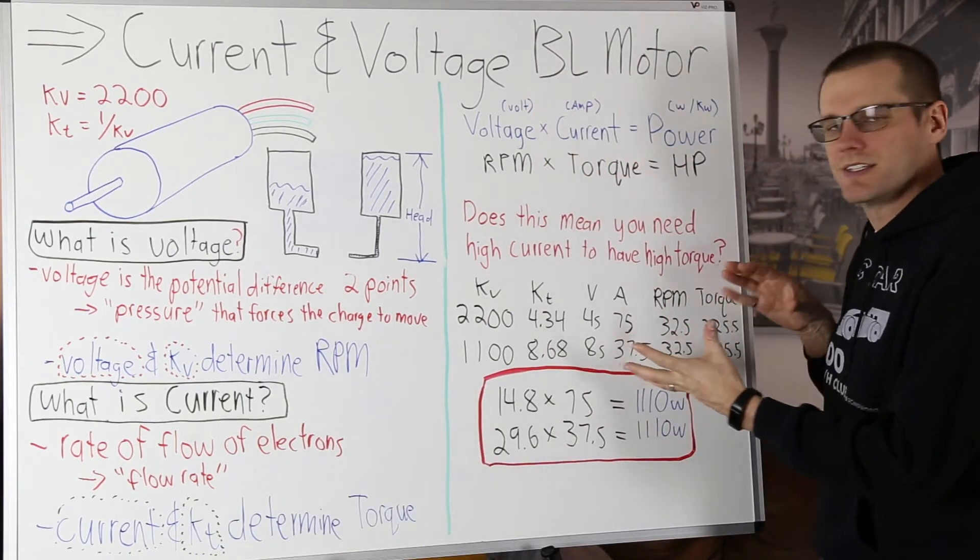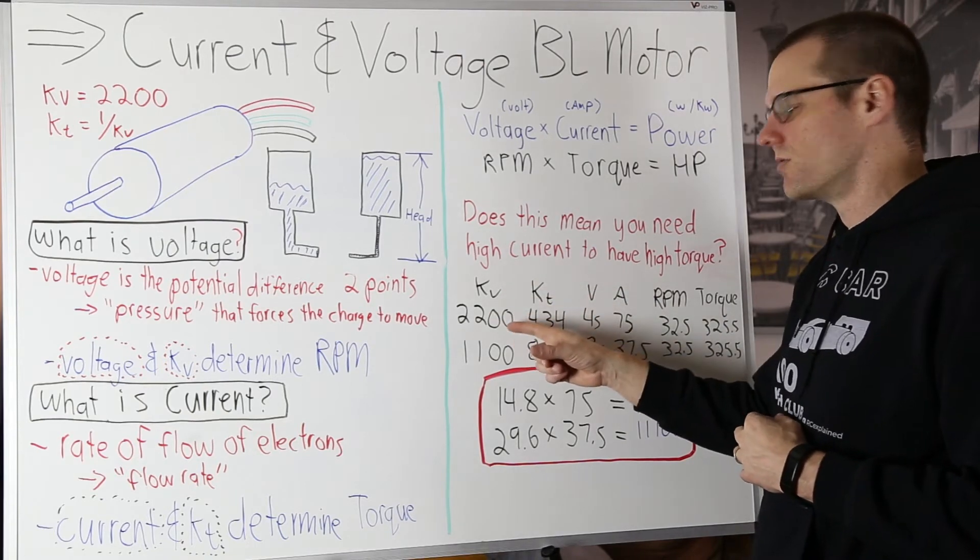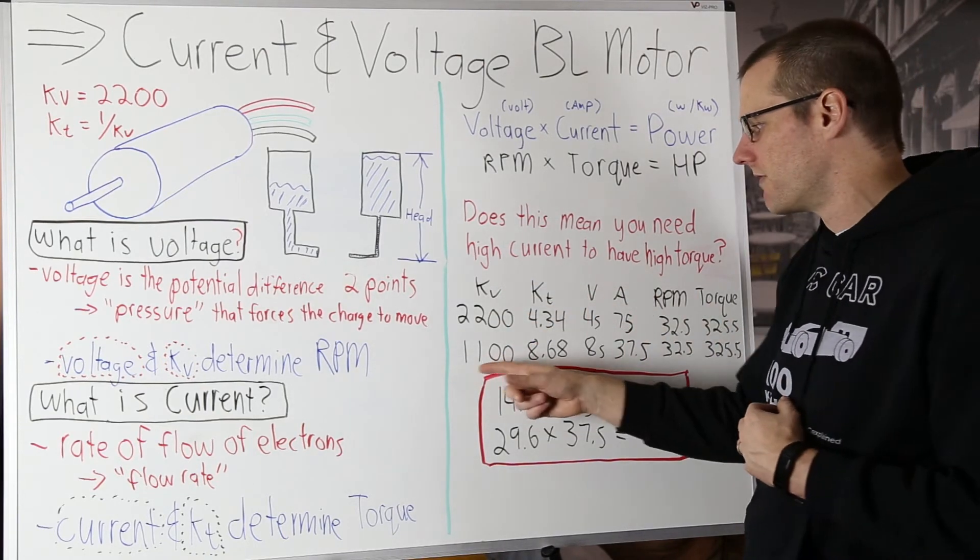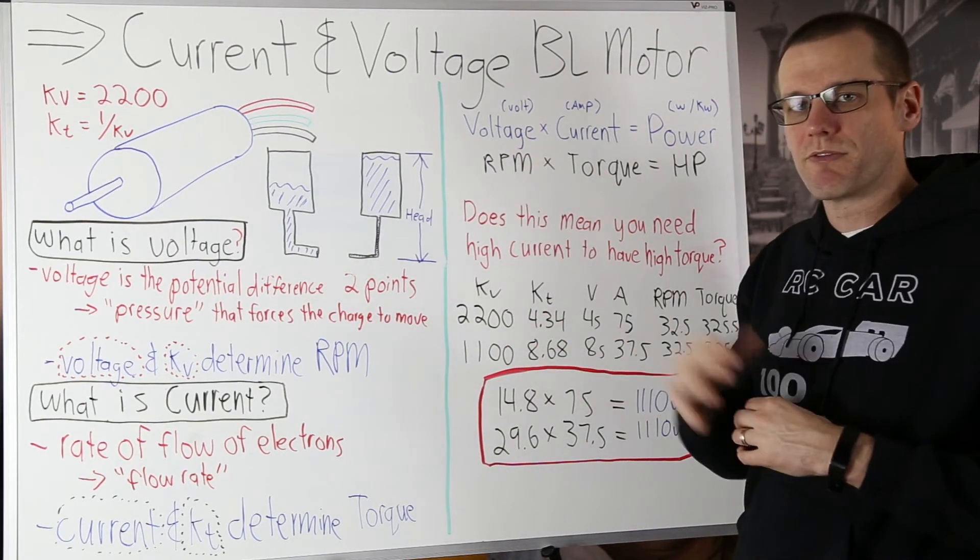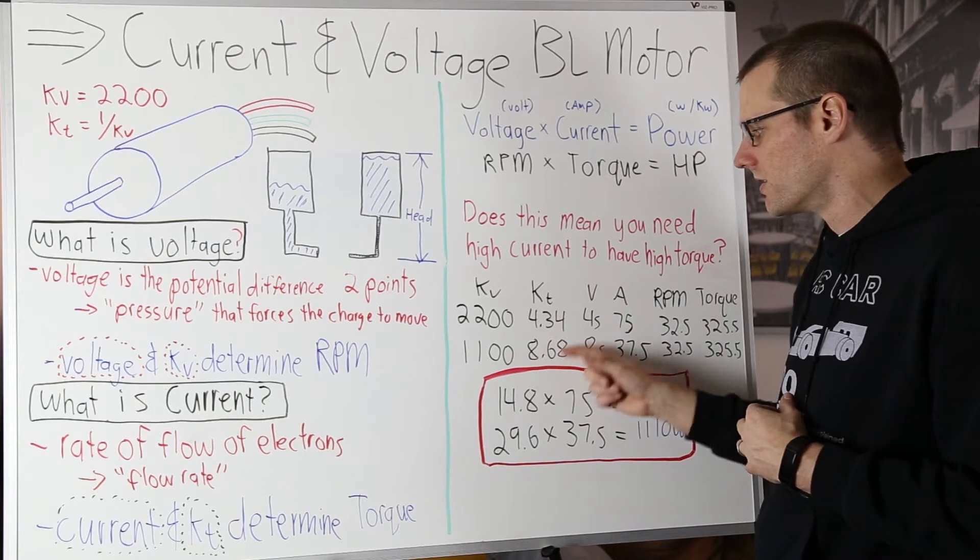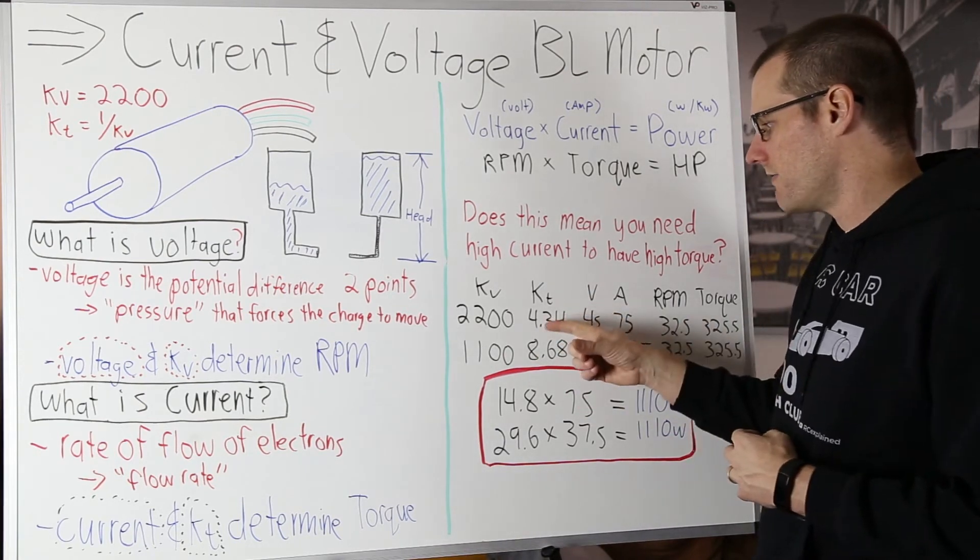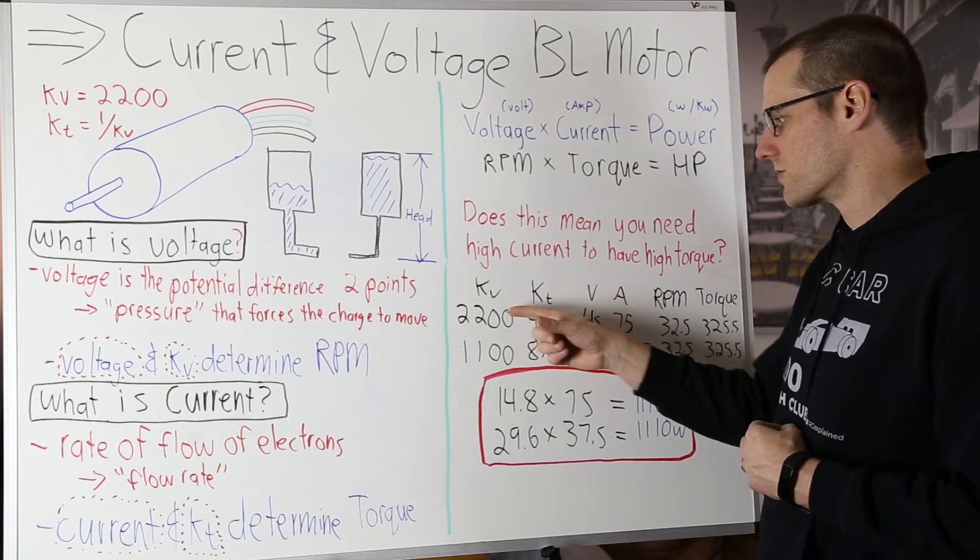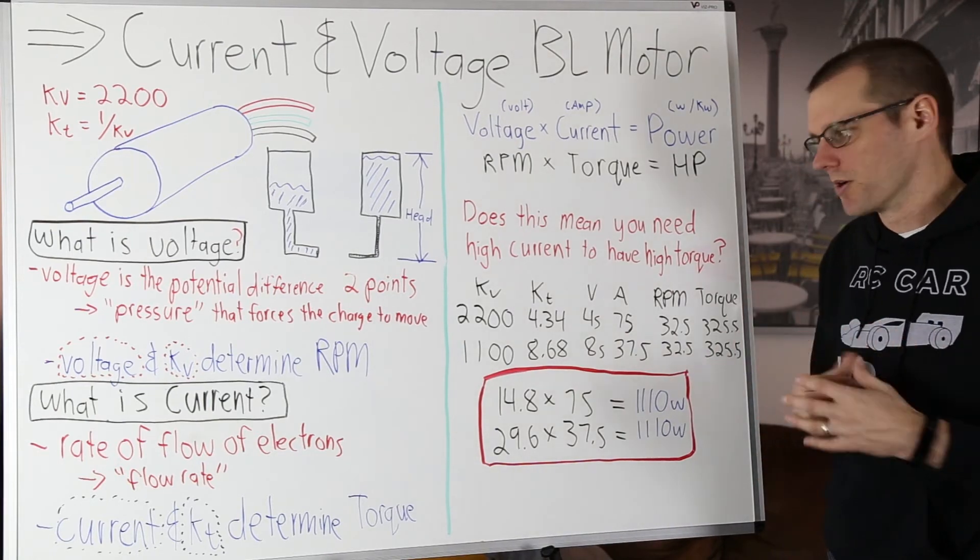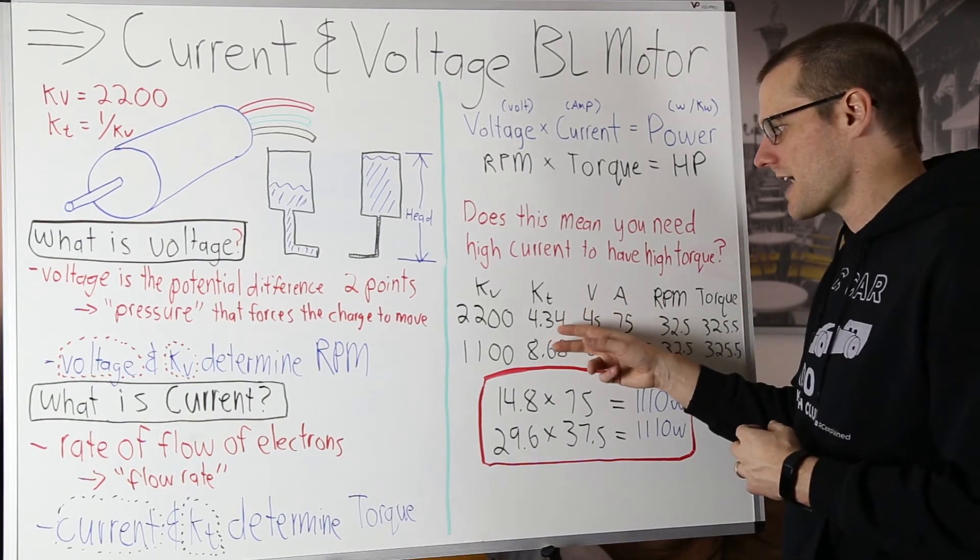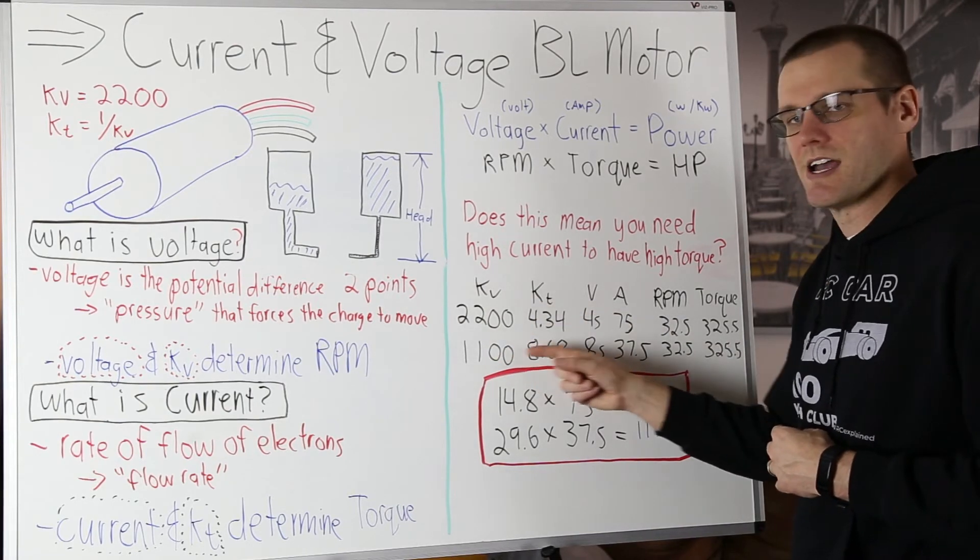Now the reason why this is true is because it's not just about the current it's also about that KT value. And you can look at the example here that we have. If you have a motor that has a KV of 2200 versus a motor that has a KV of 1100, the KT values, if you take the inverse, remember what I said before, you have to work out the correct units to arrive at these. These are millinewton meters per amp. The KT value is 4.34 for the 2200 KV motor and it's 8.68 for the 1100 KV motor. What you can notice from them is it's exactly double. Double the KV here, double the KT on the opposite motor.